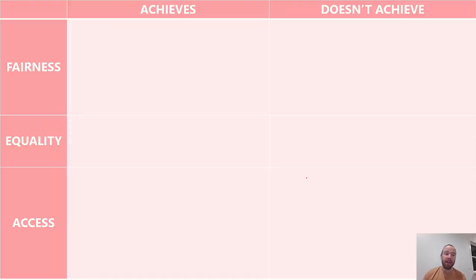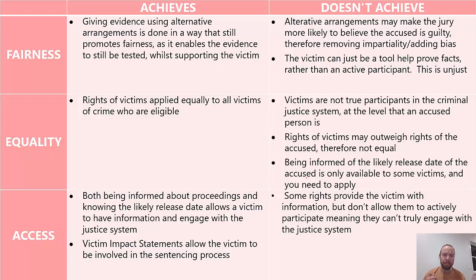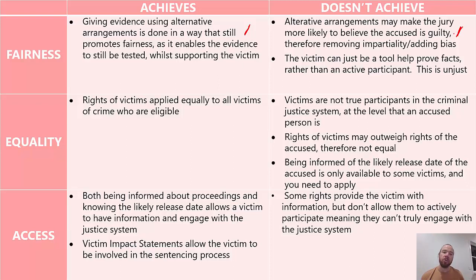Evaluating against the principles of justice: for fairness, evidence using alternative arrangements helps because it gets evidence into the courtroom that might not otherwise come in, allowing the jury to make a decision based on all of the evidence — getting the right outcome. However, what perception might that give to a jury? If the victim can't even be in the same room as this person, the jury might start thinking with a little bit of bias or prejudice towards the accused. We have to be careful about when we allow these arrangements to be used because there could be unintended consequences.